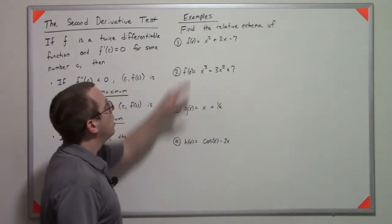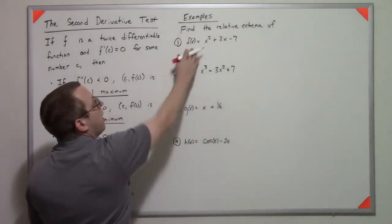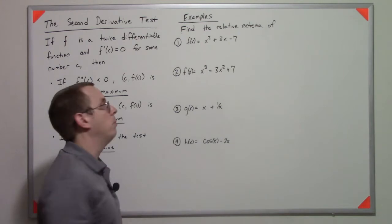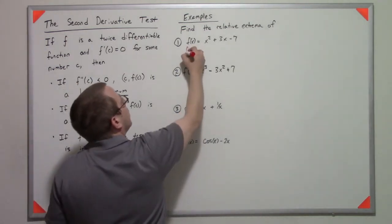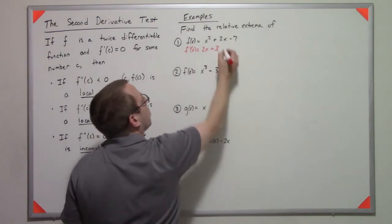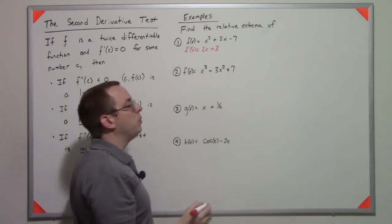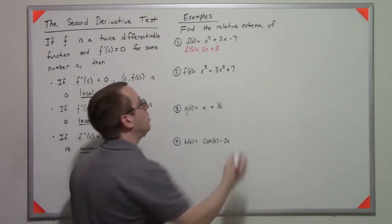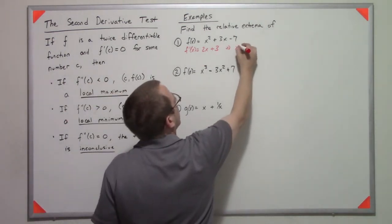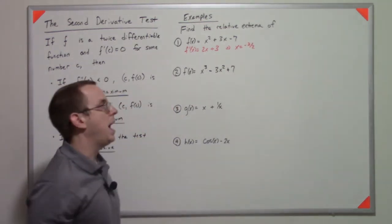So let's do some examples. Let's find the relative extrema of this first function. So if I have f(x) is this parabola, then f'(x) is 2x + 3. With that, then what I can do is I can find the places where the first derivative's equal to zero, so that's x is negative three-halves.